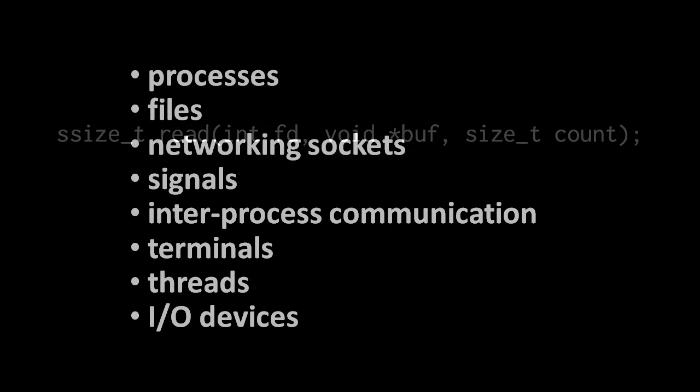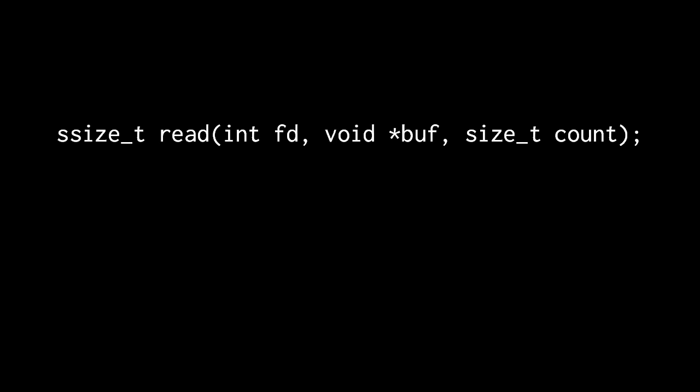In the case of interpreted languages, most interpreters are written in C or C++. To invoke a system call from Python code, the Python interpreter must provide a special function which ultimately invokes that system call in C code. Because of semantic differences between C and Python, the arguments you provide for these functions don't necessarily correspond exactly to the arguments provided to the system call in C, nor do they necessarily return exactly the same kind of value.